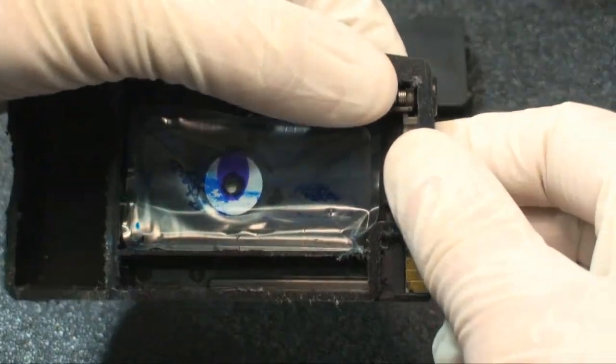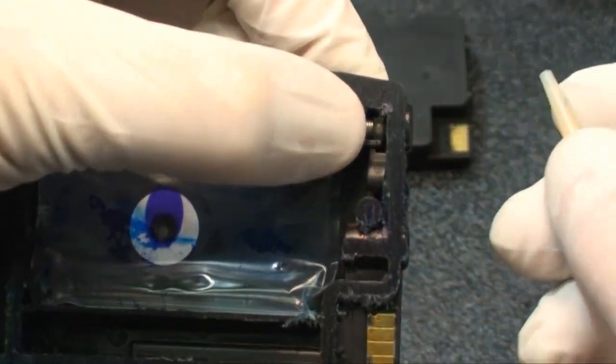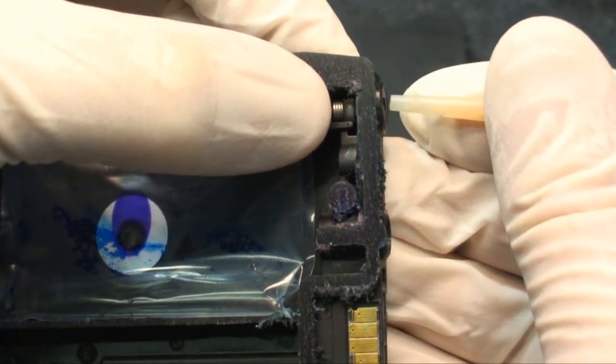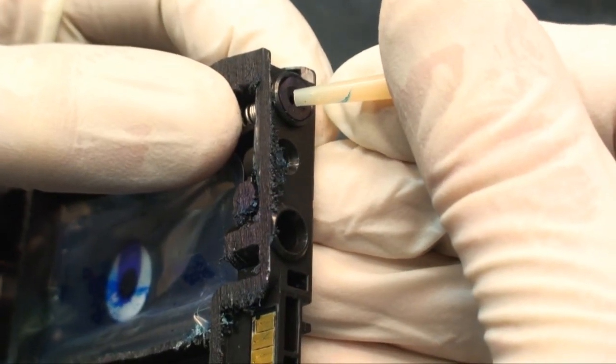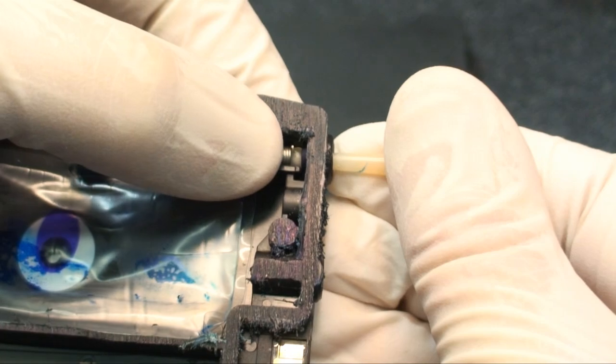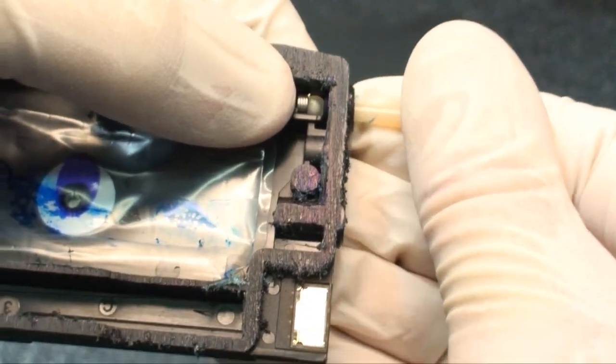This needle is used to prime the cartridge. The tapered design forms a seal in the exit port, and the tip gently presses the ball plug down, allowing you to draw ink through the holes that you punched.